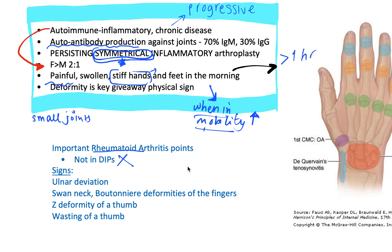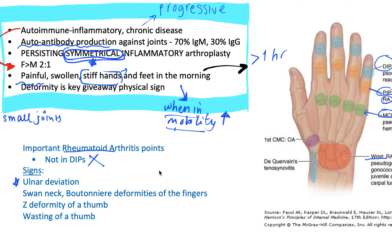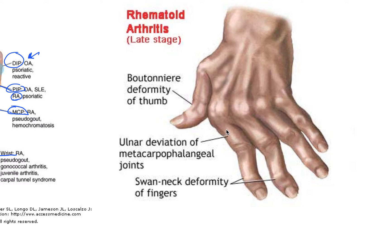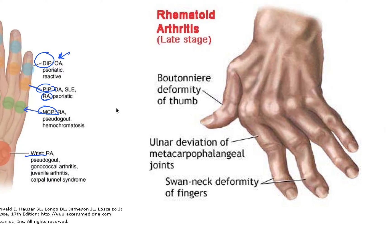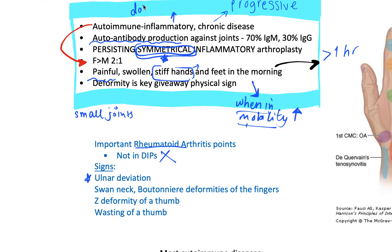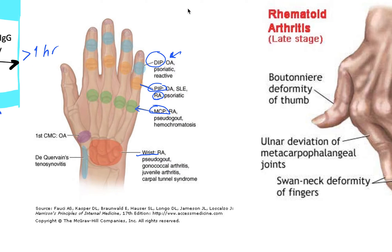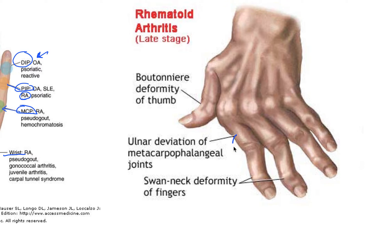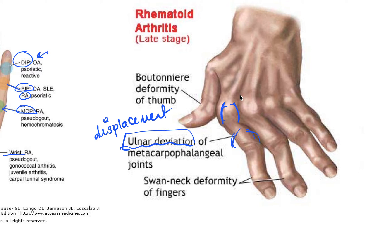What are the clinical signs you need to be aware of? First: ulnar deviation. Ulnar deviation occurs because of the autoantibodies and chronic inflammation — all of the inflammatory cells coming in produce the classic signs of inflammation: dolor (pain), tumor (swelling/enlargement), calor (heat), rubor (redness), and loss of function. With this chronic inflammation, you get swelling in the metacarpophalangeal joints, and that swelling causes displacement. That displacement is what ulnar deviation is.